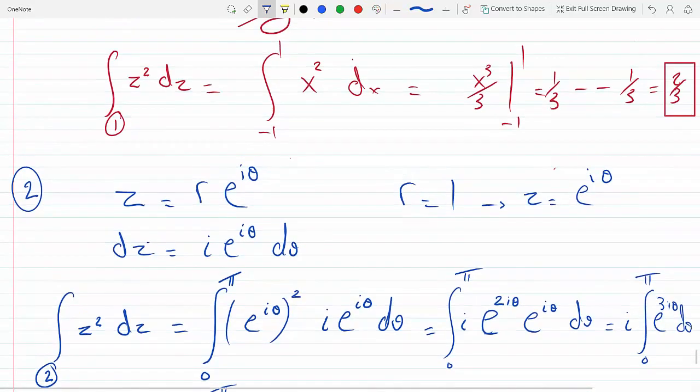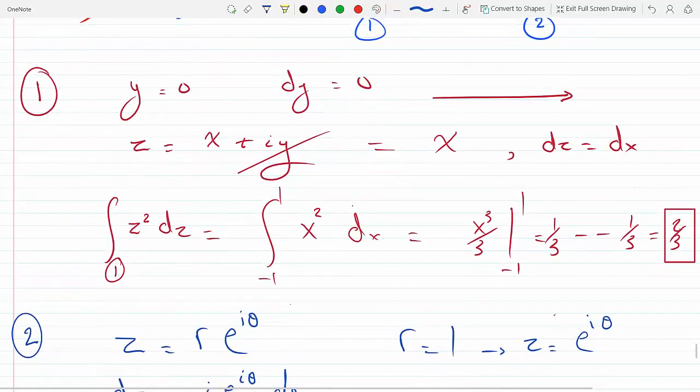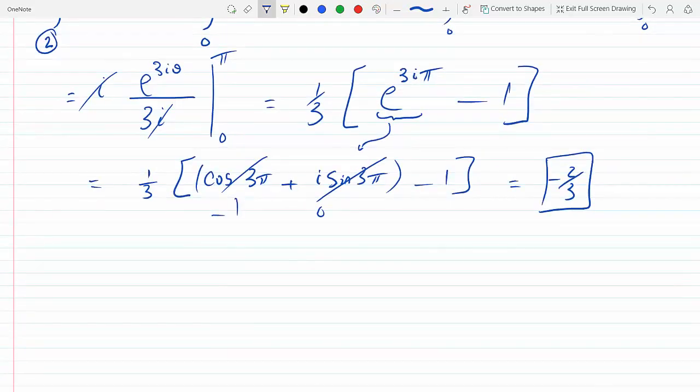Indeed, if we add them, the first one is two-thirds, the second one is negative two-thirds. Just like Cauchy's theorem predicts, since this is a closed integral, a contour integral that's analytic everywhere inside C, the closed contour integral of f(z) dz has to be zero. And it is. So z squared dz is two-thirds minus two-thirds equals zero.